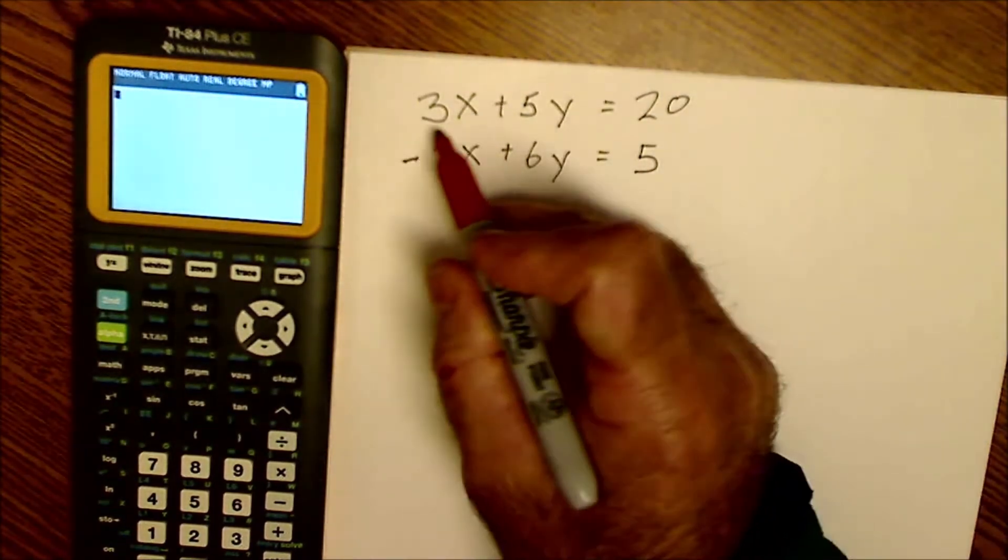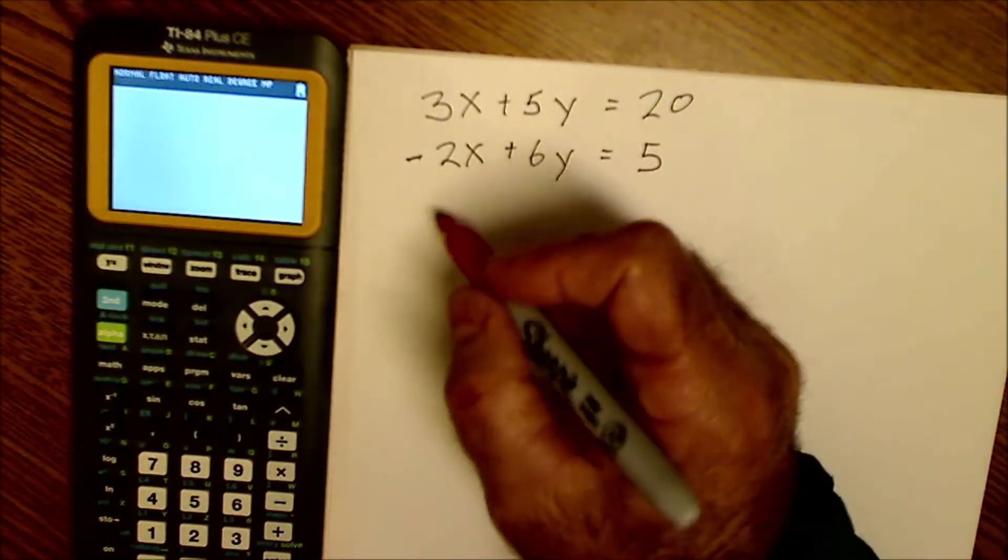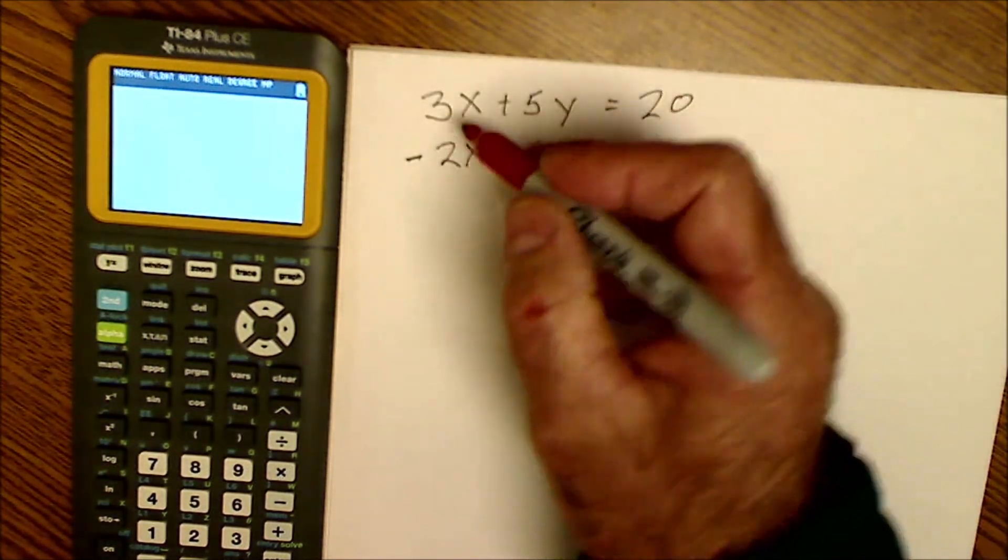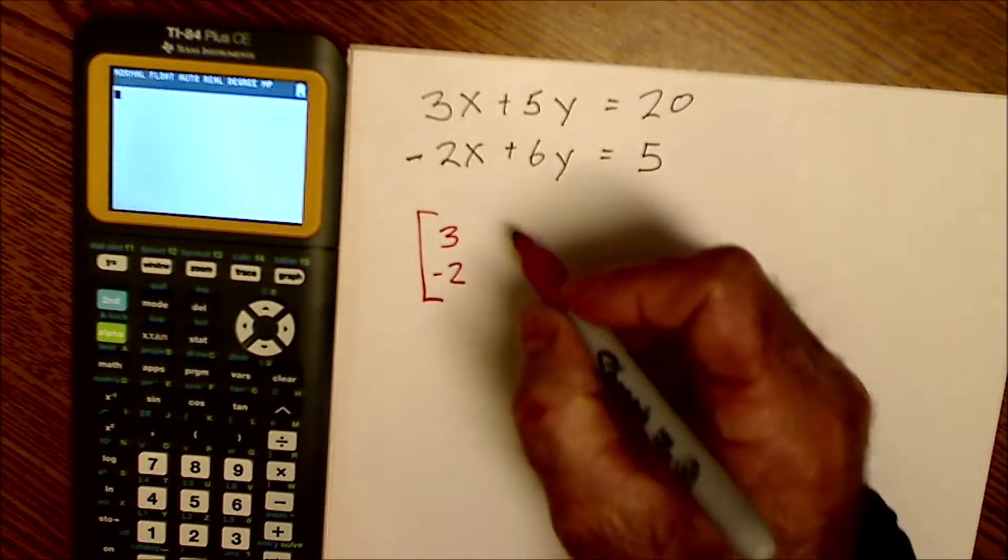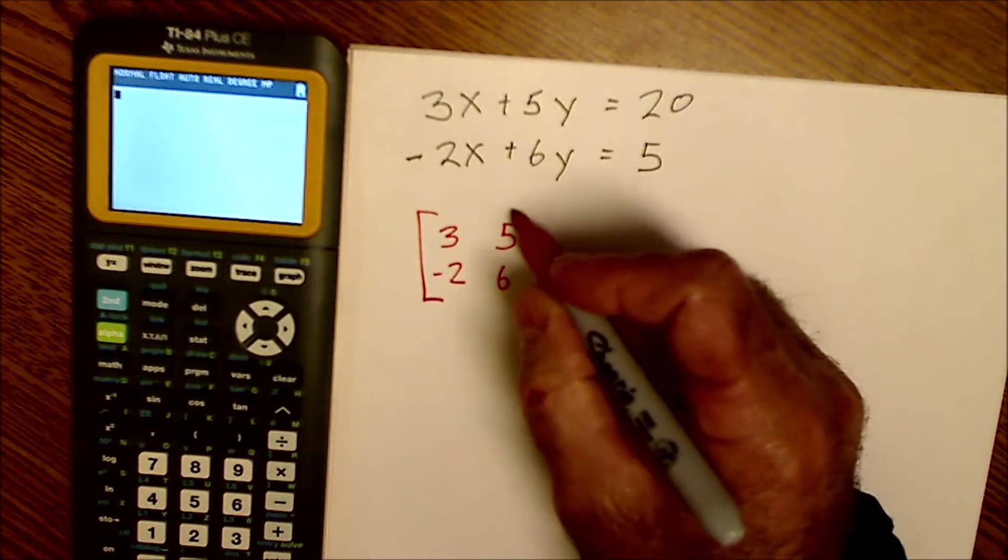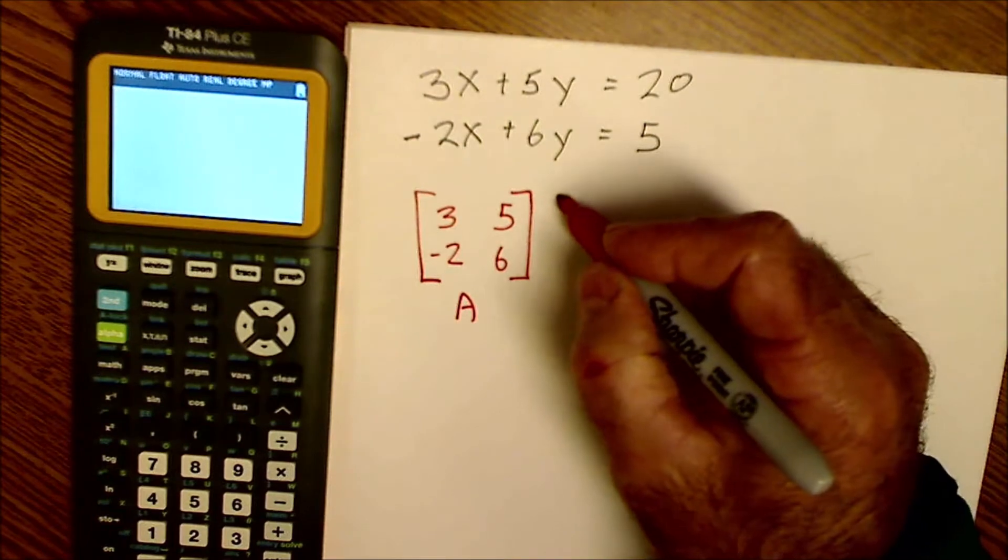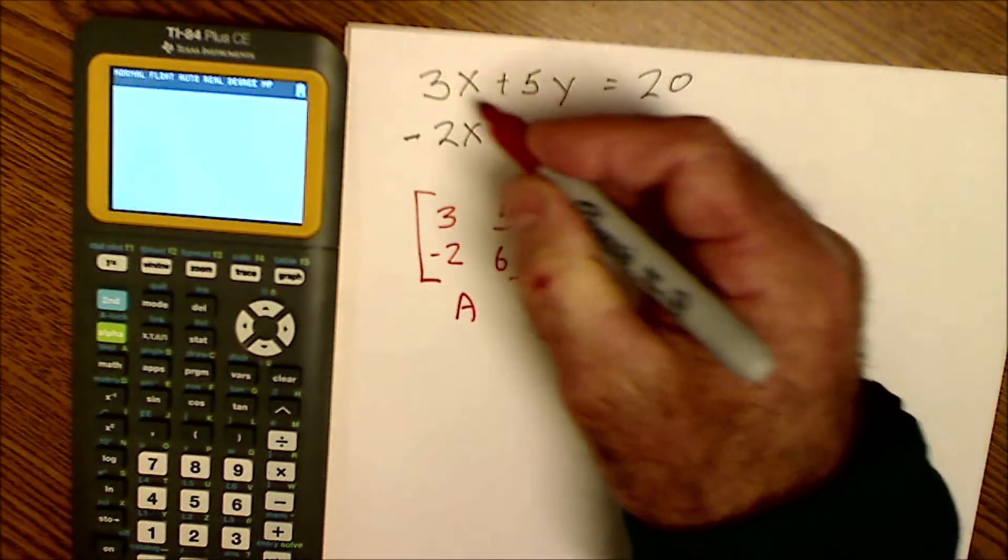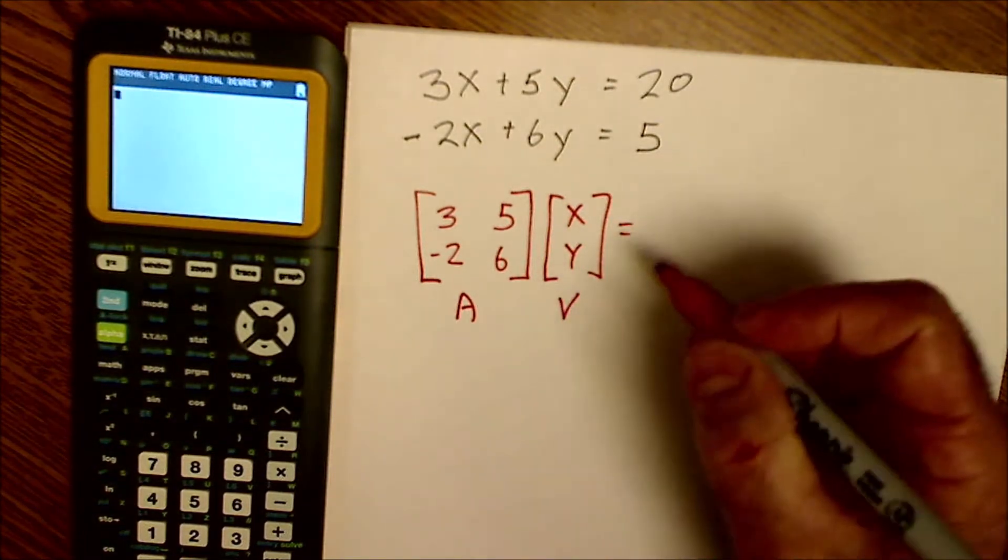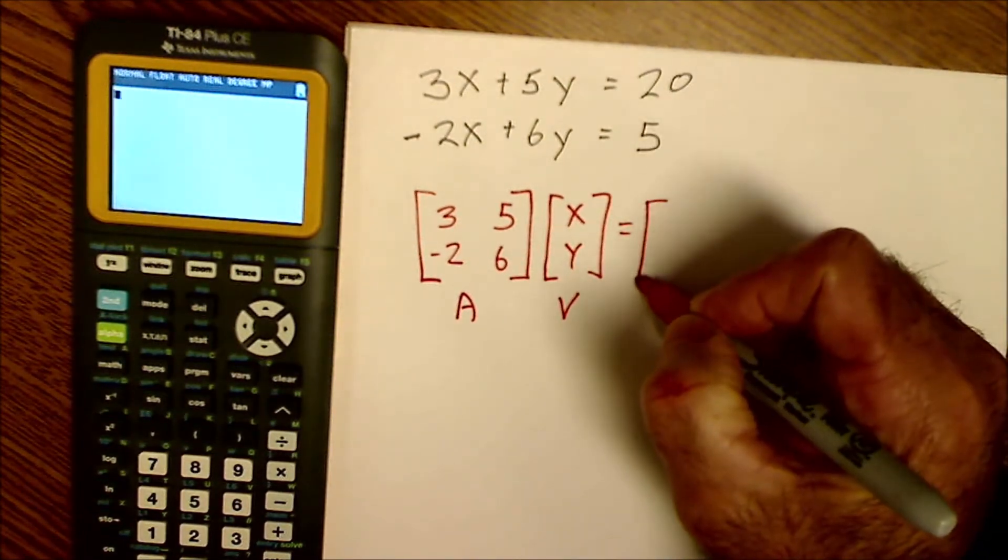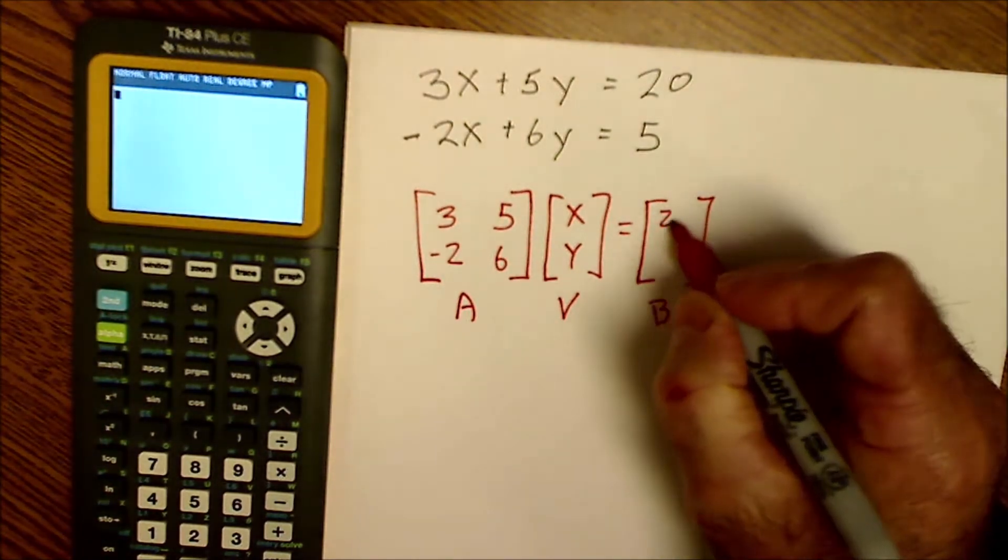So let me just show you the idea with two variables first and then we'll do three variables next. So the first thing, you have to have your x value first and then your y value, then equal to a solution. Then I'm going to create a matrix with the coefficients in front. So I'm going to take that three, negative two, five, and six. I'm going to take that, we'll call that matrix A. I'm going to multiply it by a variable matrix, x, y. We'll call that v. And then it's going to be equal to a solution matrix. We'll call that matrix B, 20, 5.